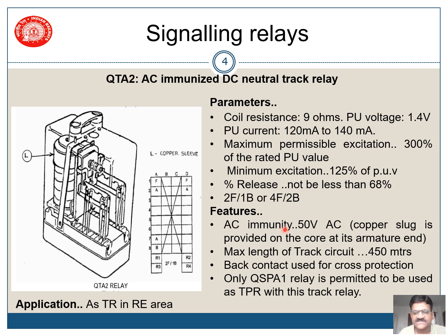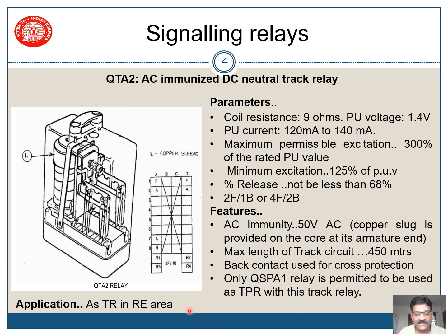If 50 volts AC comes onto the track relay, the track relay will have no difference in its operation. The maximum length of track circuit using the QTA2 relay is 450 meters. Back contacts are used for cross protection similarly. When using QTA2 relays, only the QSPA1 relay is used as its repeater relay — that is the TPR for this track circuit. The application: this track relay is used in RE areas only as a track relay.